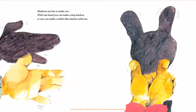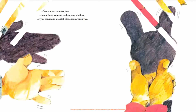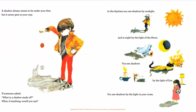Shadows are fun to make too. With one hand you can make a dog shadow, or you can make a rabbit-like shadow with two. A shadow always seems to be under your feet, but it never gets in your way. If someone asked, 'What is a shadow made of?' — what, if anything, would you say?